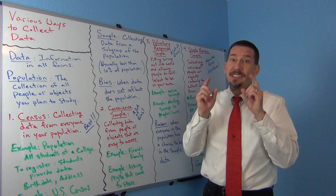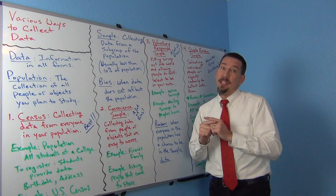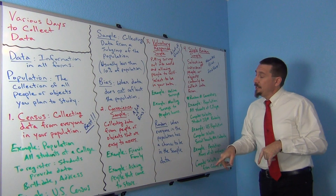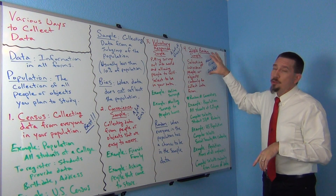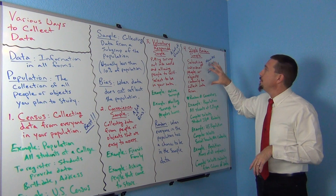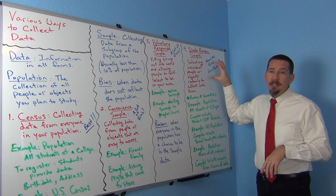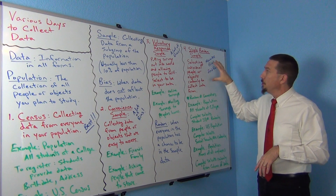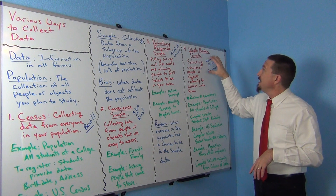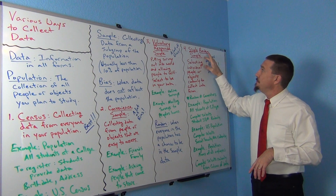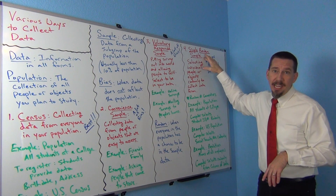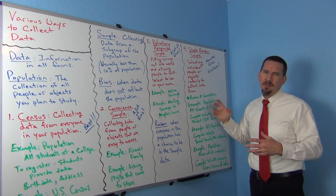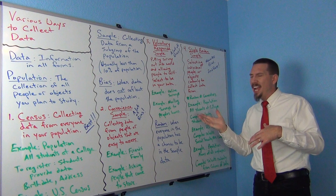Now that's very difficult, actually. The go-to random sample — the most common data collection method for people who know statistics — is called the simple random sample, sometimes referred to as SRS.